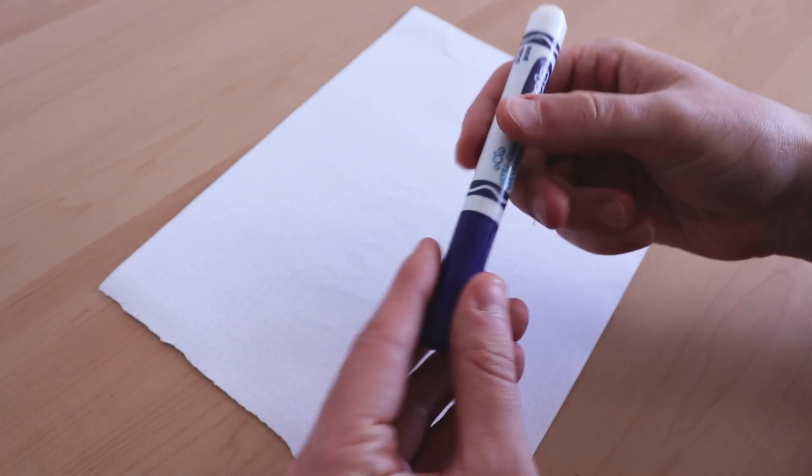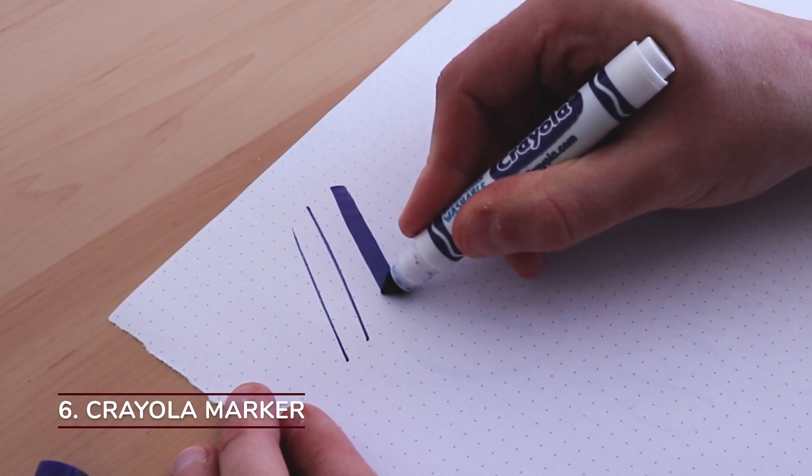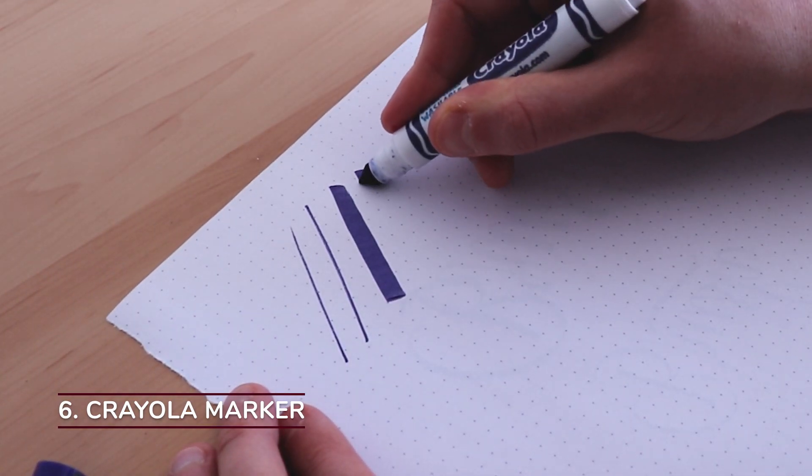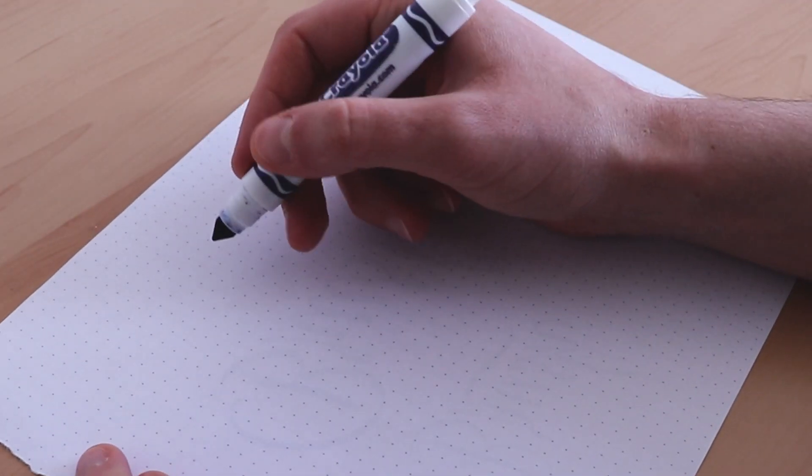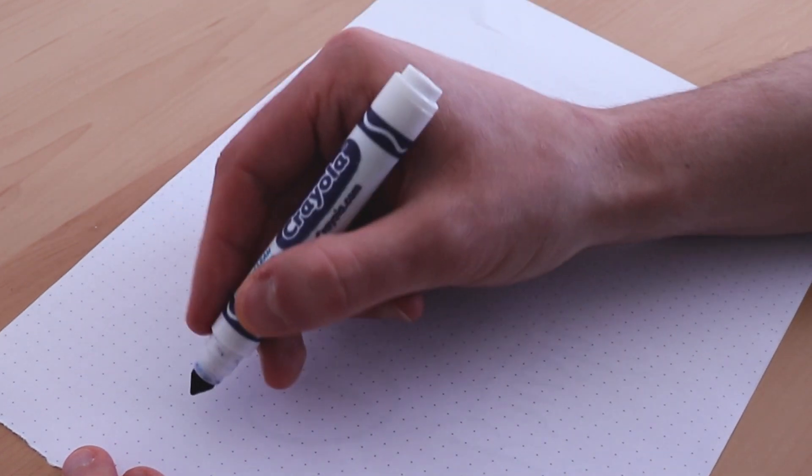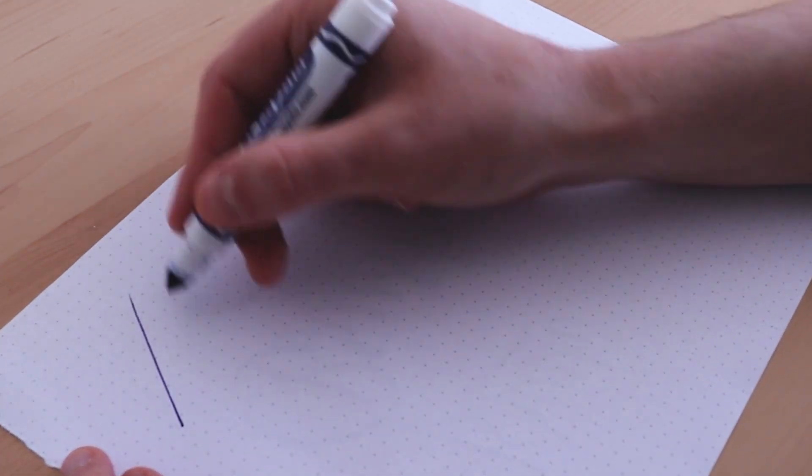Up next, one of my favorite pens, the Crayola Marker. The size of the nib is large but you can easily achieve smaller side strokes. The Crayola doesn't have a flexible brush tip. It's more of a broad pointed tip that surprisingly allows you to create both thick and thin lines.